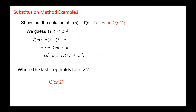This is another example: show that the solution of T(n) = T(n-1) + n is O(n²). We guess T(n) = cn², then T(n) = c(n-1)² + n = cn² - 2cn + c + n = cn² + n(1 - 2c) + c. This is less than cn² and solves for c greater than 1/2. So the complexity of this algorithm is O(n²).